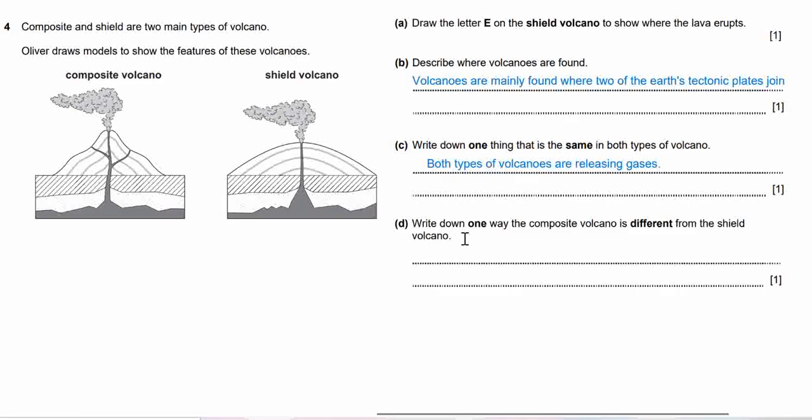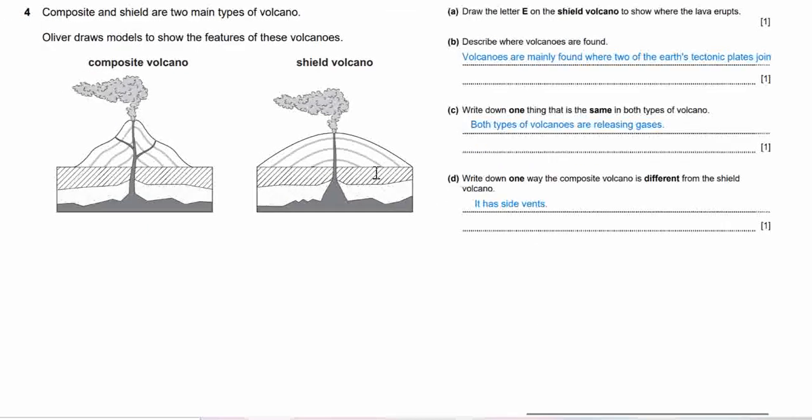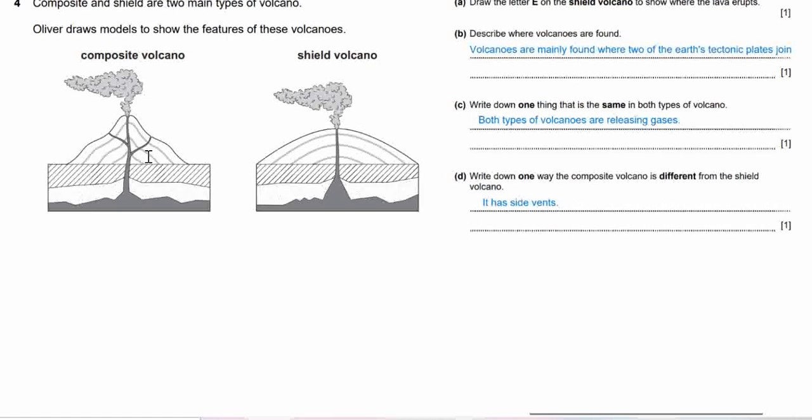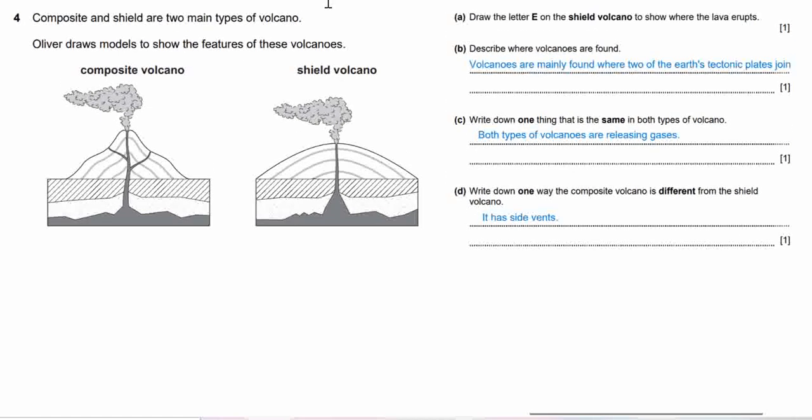Move on to question D. Write down one way the composite volcano is different from the shield volcano. Compare the pictures, see the difference and get your answers. Here's the explanation. This is the example of correct answers. It has side vents here. You can see from here. This is the side vents of composite volcanoes that makes it different from shield volcano.